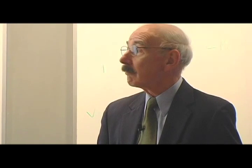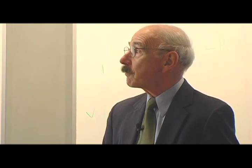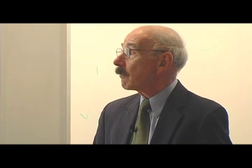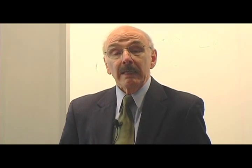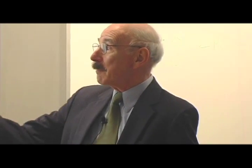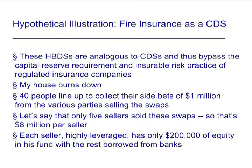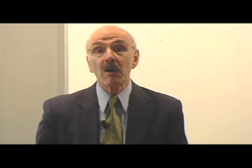My house burns down. Forty other people line up to collect side bets of a million from the various parties selling the swaps. And remember, these people didn't have to have an insurable risk — I own the house, I care if it burns down. These people could be arsonists for all we know. Let's say that only five sellers sold these swaps, so that would be eight million per seller. But they're highly leveraged, so they only have $200,000 of their own money in the entity that's selling these swaps. The rest is borrowed from banks.